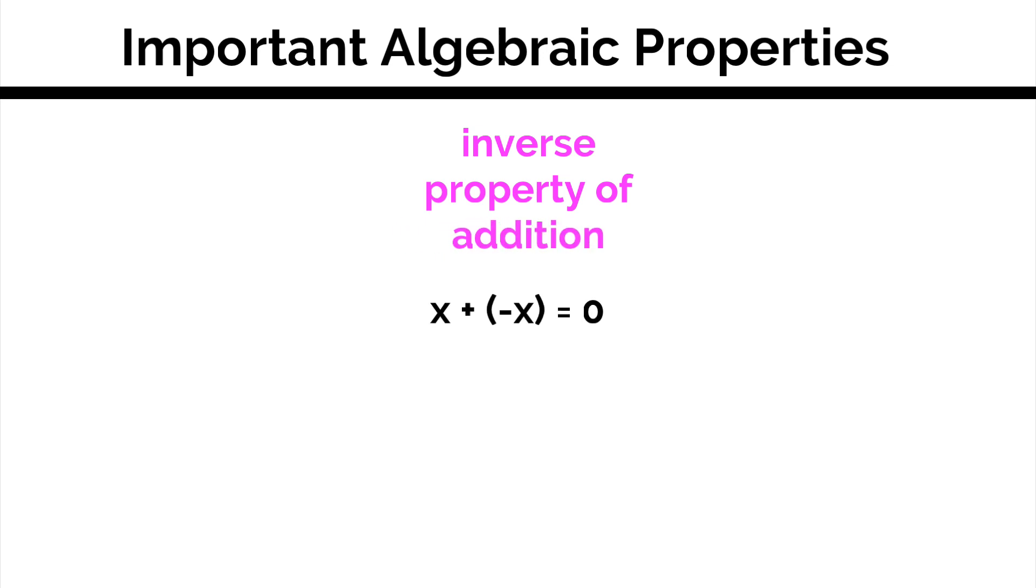And lastly, we have the inverse property of addition. This says that anything plus its additive inverse equals 0. So x plus negative x equals 0.